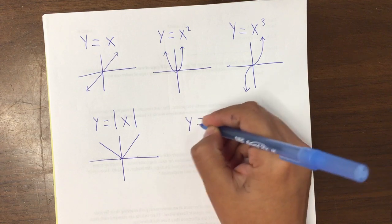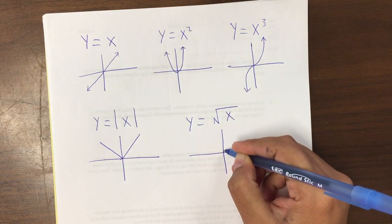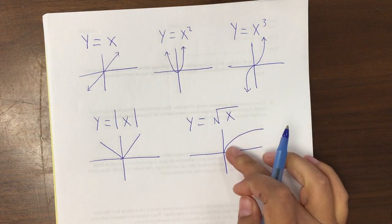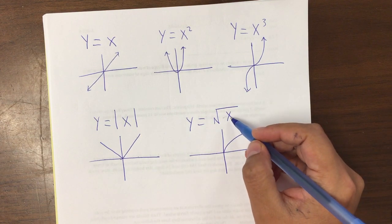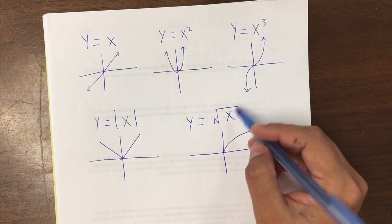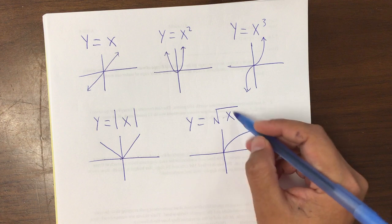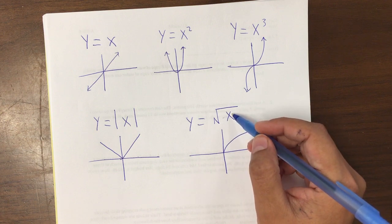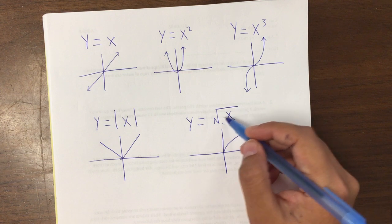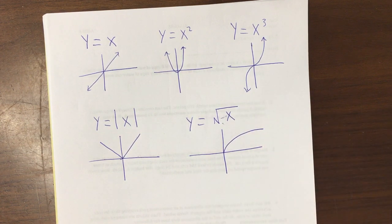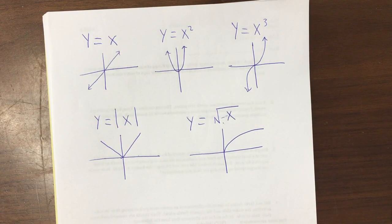Then you have y equals square root of x. And so we only have half of the graph because we cannot have negative x inside of the square root. Because we need a number that multiplied times itself is always positive. And you don't get anything multiplied times itself being positive, I mean negative. So that's why we cannot have negative x. So these are the basic shapes of, we could call them mother graphs.